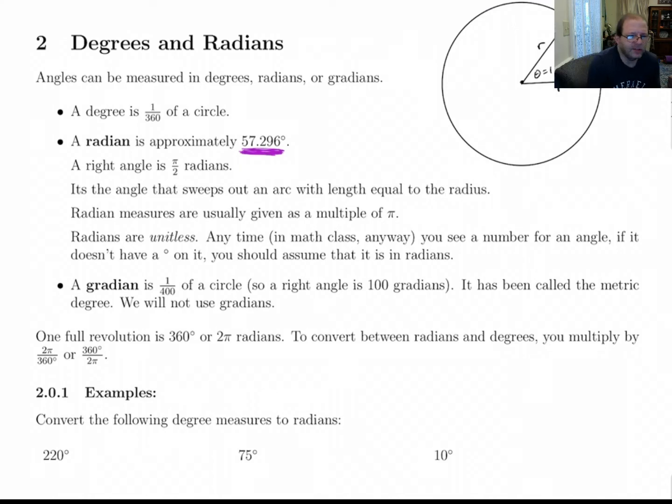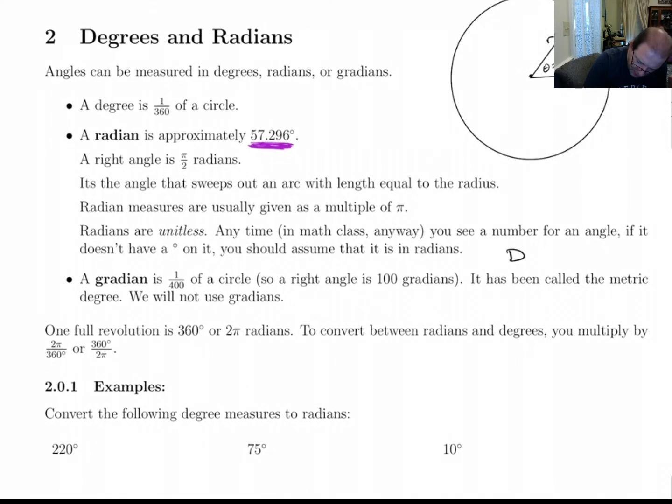Gradians. Gradians is another unit. We're not going to use it, but I wanted to mention it. Sometimes you'll see calculators that have a DRG button on it for converting between degrees, radians, and gradians. Gradians is 1/400th of a circle. And the reason it was defined that way was so that a right angle would be 100 gradians. And they've also been called the metric degree.